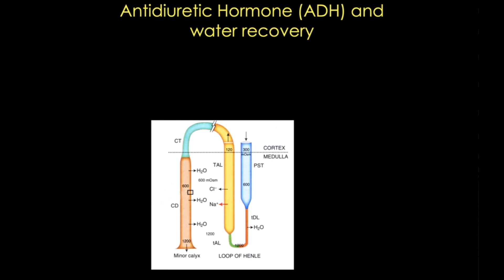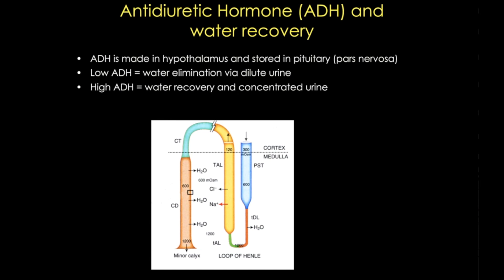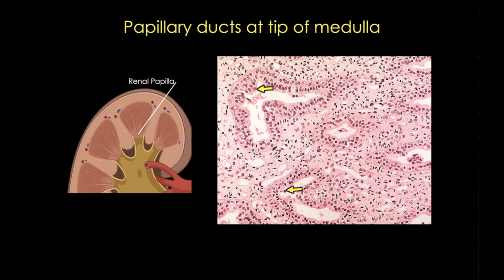In contrast, antidiuretic hormone affects water transport directly. Low ADH causes water elimination via dilute urine, while high ADH is important for water recovery and concentrated urine. When ADH is high, it causes vesicles containing aquaporins to insert into the plasma membrane of collecting tubules and collecting ducts, causing water to flow into the epithelial cells, which effectively concentrates the urine. After the collecting ducts perform their final alterations, they merge to form the papillary ducts — and the filtrate is now considered urine.